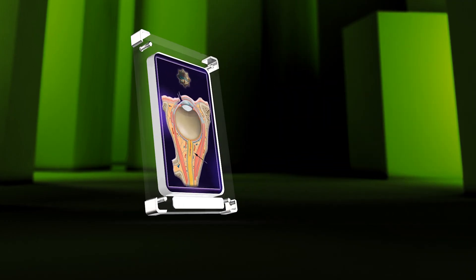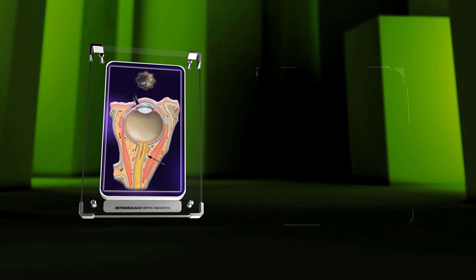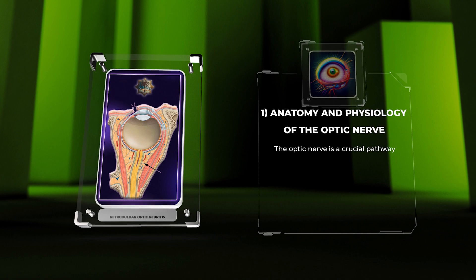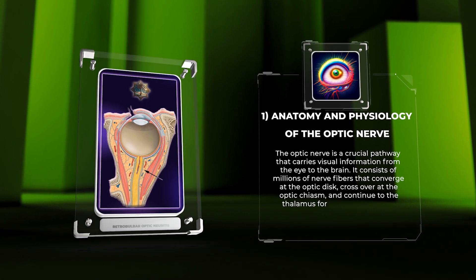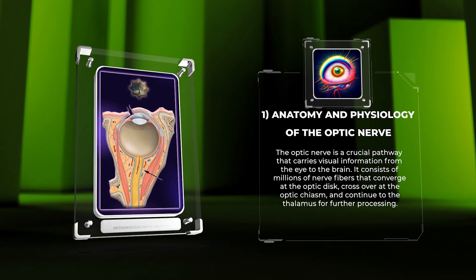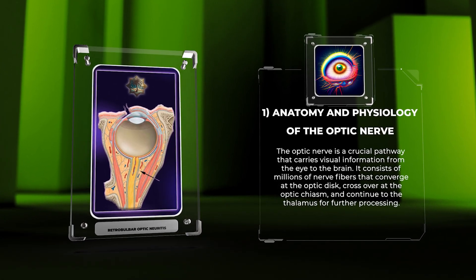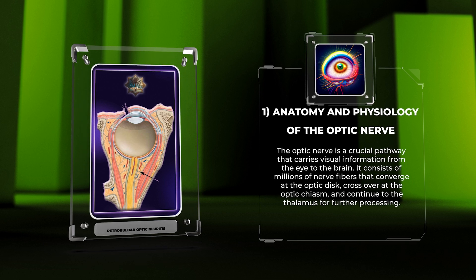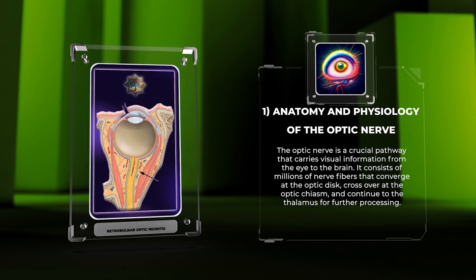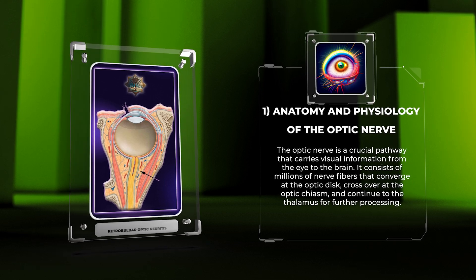The optic nerve is a crucial pathway that carries visual information from the eye to the brain. It consists of millions of nerve fibers that converge at the optic disc, cross over at the optic chiasm, and continue to the thalamus for further processing.